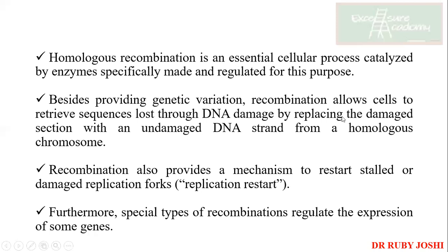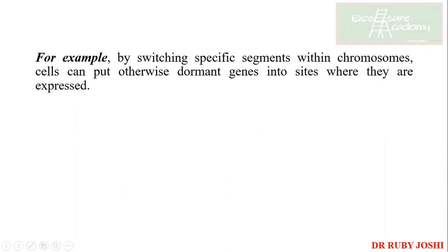Recombination helps to prevent damage and to restart stalled or damaged replication. This is also important because we have mechanisms for DNA damage. Let's say that a double-strand break is present. If there is a double-strand break, the replication fork coming will find that the DNA polymerase is getting stuck. Now, because of recombination when it happens, there will be an exchange of sequences. And then the DNA polymerase is able to continue. The recombination process is very essential for the cell system.